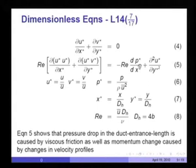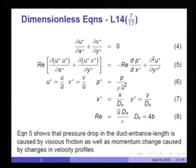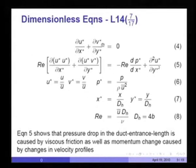The pressure gradient is balanced by both the momentum change terms and the viscous term d²u/dy². Viscous friction as well as momentum change caused by changing velocity profiles along the duct length balances the pressure gradient, which itself varies with x. What makes it difficult to obtain solutions is that we have two equations and three unknowns — u, v, and pressure. Unlike in boundary layers where the pressure gradient is specified, we cannot do so in internal flows and must find some tricks.